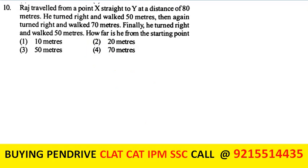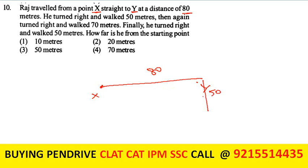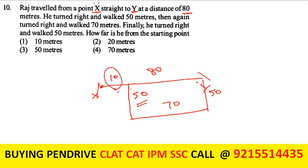Raj traveled from point X straight to Y, a distance of 80 meters. He turned right and walked 50 m, turned right again and walked 70 m, then turned right and walked 50 m. The total horizontal distance: 80 minus 70 = 10 m. He is 10 meters from the starting point. The first option is the answer.